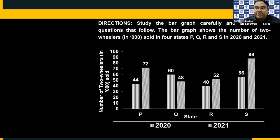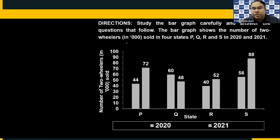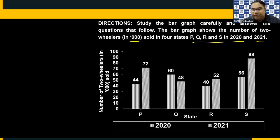Study the bar graph carefully and answer the questions that follow. The bar graph shows number of two wheelers in thousands sold in four states P, Q, R, S in 2020 and 2021. The first bar represents 2020 and the second bar represents 2021.